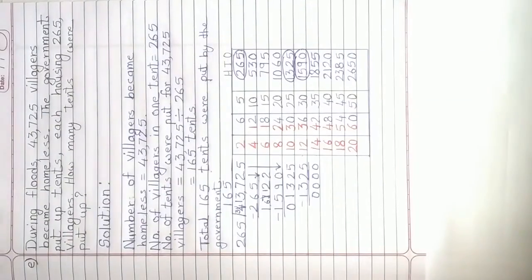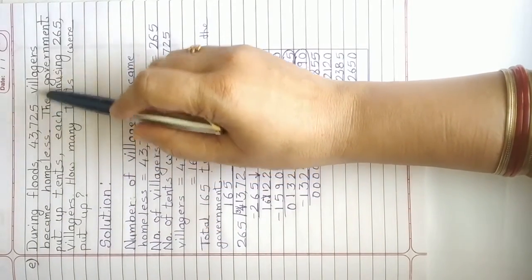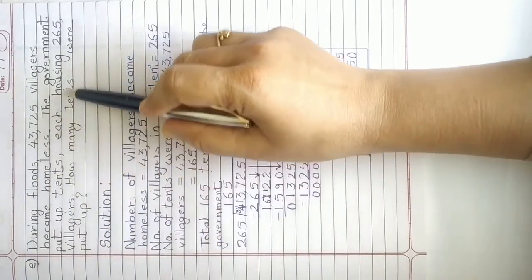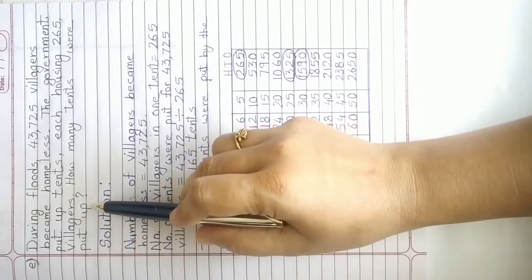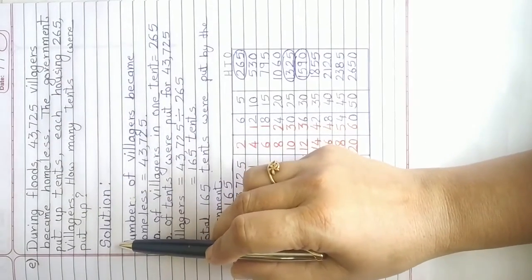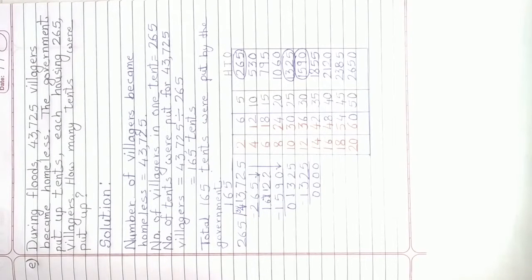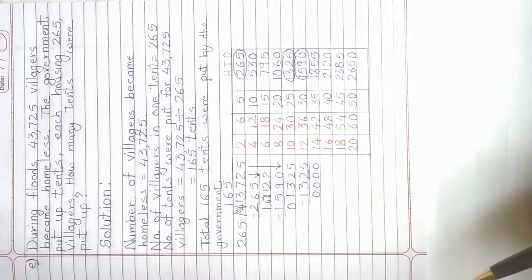For the last question. Question number E: During floods, 43,725 villagers became homeless. The government put up tents, each housing 265 villagers. How many tents were put up? To find a solution, first we will write solution. More is given and find out less, so we have to do division.